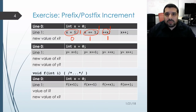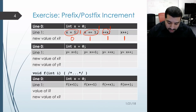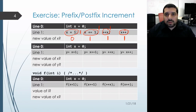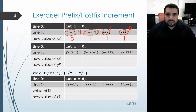Finally we have our postfix increment, which also increments the value of x so that x becomes 1. However, the difference is that this entire expression evaluates to a temporary that contains the old value of x before the increment happens. So if we were to print it out we would actually get the value 0 printed out.